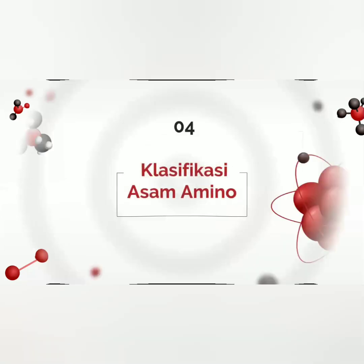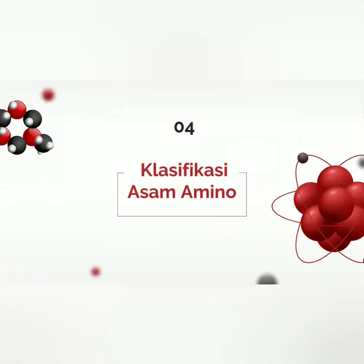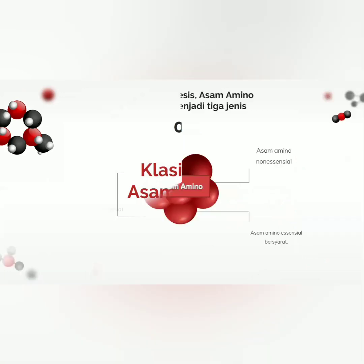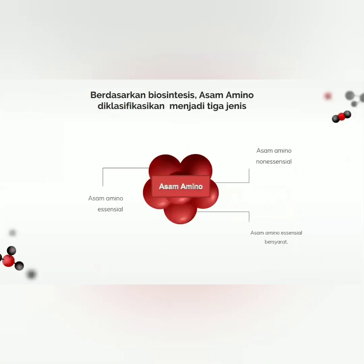Selanjutnya ada klasifikasi asam amino. Berdasarkan biosintesis, asam amino diklasifikasikan menjadi tiga jenis: ada asam amino esensial, asam amino non-esensial, dan asam amino esensial bersyarat.